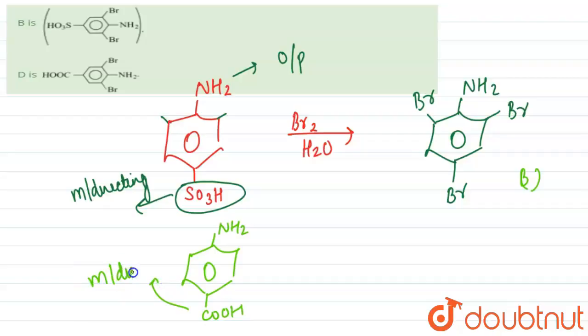It is meta-directing, and amino we know is ortho-para directing. So once again we get the same product. This bromine will replace this carboxylic group as well as appear on the ortho of the amine group. So this is our product D. B and D are the same product.